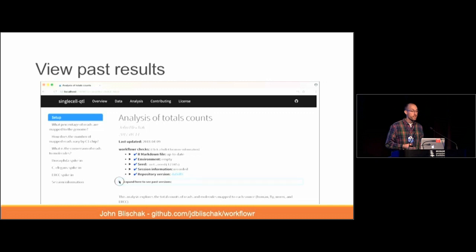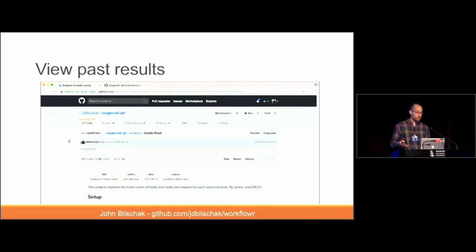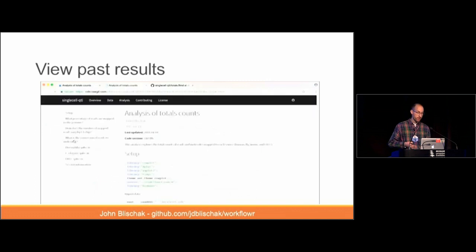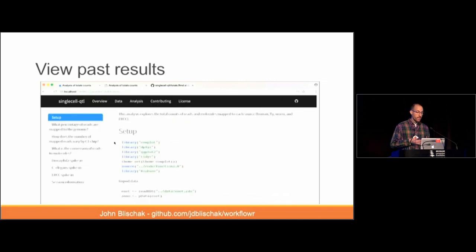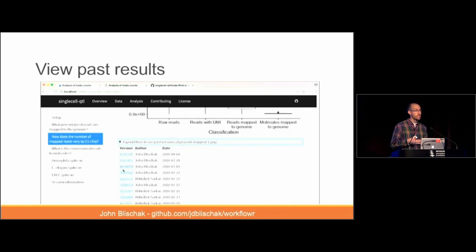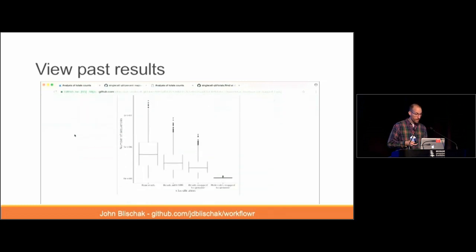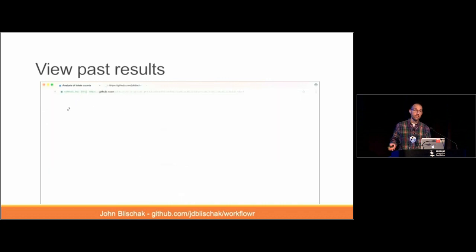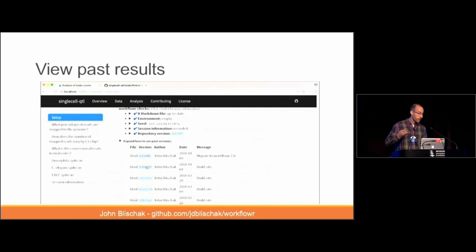WorkflowR exploits this three-step process to make it easier for you and your collaborators to see past results. It inserts links to all past versions of the R Markdown file that ever existed in the Git repository, as well as rendered versions of the past HTML. Each figure file within the analysis has a drop-down menu where you can click on any past version and immediately see it on GitHub. What's nice is that collaborators don't need to know anything about Git or download anything — you just send them a link and they can see both current and past results.